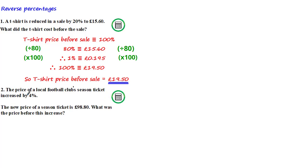The price of a local football club's season ticket increased by 4%. The new price of a season ticket is £98.80. What was the price before this increase?